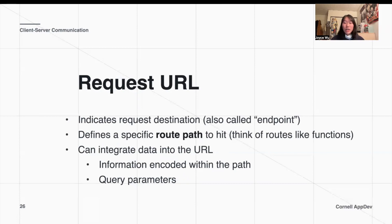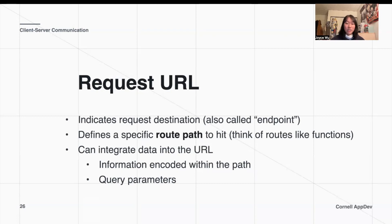We can also integrate data into the URL itself. We talked about how the front end can send information back through a request body, but that's not the only way — we can also send information through the URL itself when we ask the back end to do something. These things are often taken as query parameters into the functions that we write in our back end.